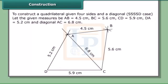Construction. To construct a quadrilateral given four sides and a diagonal — the SSSSD case. Let the given measures be AB = 4.5 cm, BC = 5.6 cm, CD = 5.9 cm, DA = 5.2 cm, and diagonal AC = 6.8 cm.